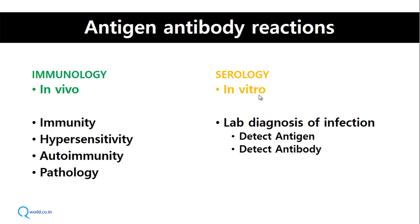There are two terminologies: immunology and serology, both depicting antigen-antibody reactions. If antigen-antibody reactions happen in vivo and you study them, that is immunology, which covers immunity, hypersensitivity, autoimmunity, and immune-mediated pathology. If antigen-antibody reactions happen in vitro and are used to diagnose infectious diseases by detecting antigen or antibody, that branch is serology. Today's session focuses on serological reactions in vitro.